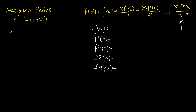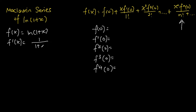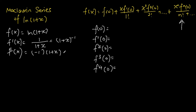Let the function f(x) be equal to ln(1+x). When we differentiate the function one time we get 1 over (1+x), or simply (1+x) to the power of negative 1 in index form. Differentiating the function two times we get negative 1 times (1+x) to the power of negative 2, which is the same as negative 1 over (1+x) squared.